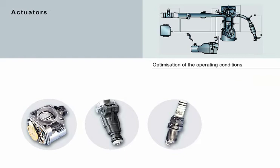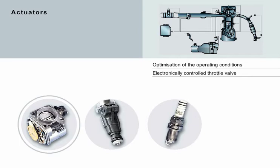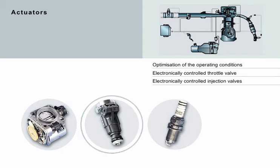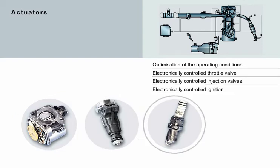In this chapter you will discover which actuators assist the engine in fulfilling its functions and how these actuators optimize the operating conditions of the engine. You'll find out about the function and effect of the electronically controlled throttle valve, the electronically controlled injection valves, and electronically controlled ignition.